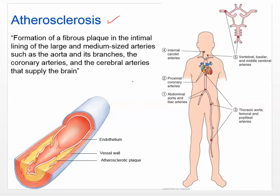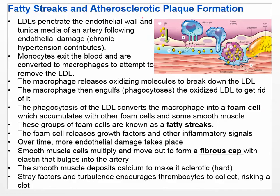Atherosclerosis: the formation of a fibrous plaque in the intimal lining of large and medium-sized arteries, such as the aorta and its branches. Really, it's plaques building up inside vessels, which can cause clotting or ischemia in the coronary arteries and the cerebral arteries. This is a major killer with many secondary problems like stroke and myocardial infarction. Let's go through how these plaques form and what they're made of.